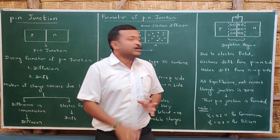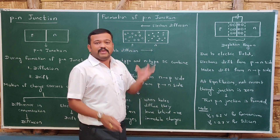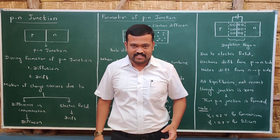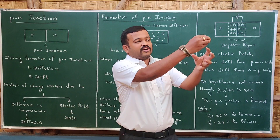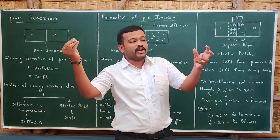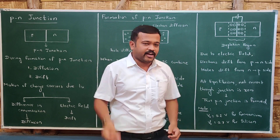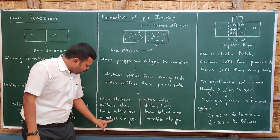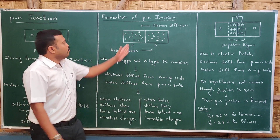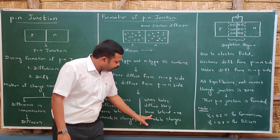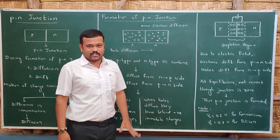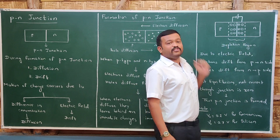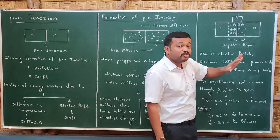When electrons move from N side to P side, they leave behind positive immobile charges. When an electron leaves a position, it becomes a positive immobile ion. Similarly, when holes move from P side to N side, they leave behind negative immobile charges. At the junction we therefore have positive immobile charges due to electron diffusion and negative immobile charges due to hole diffusion.